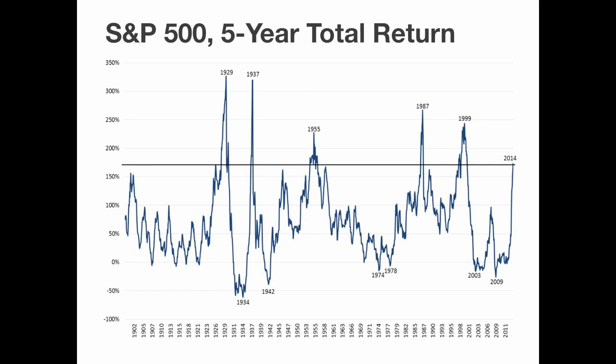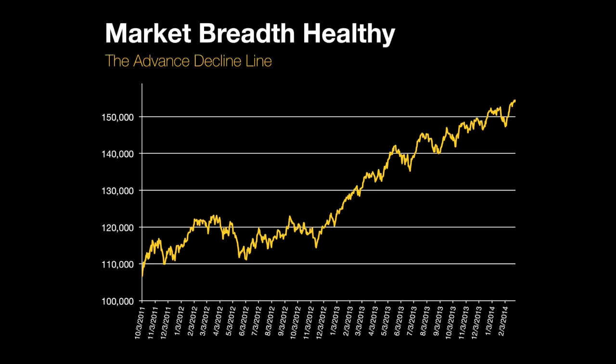Let's take a look at some market breadth indicators. The first one is the more classic market breadth indicator — the advance/decline line — going back to 2011. What it does is measure how many stocks are rising when the S&P 500 rises. As you can see by the line, it has gone to a new all-time high, which means that there are lots of stocks participating in this rally. It's a really healthy market right now with lots of stocks moving higher with the S&P 500.